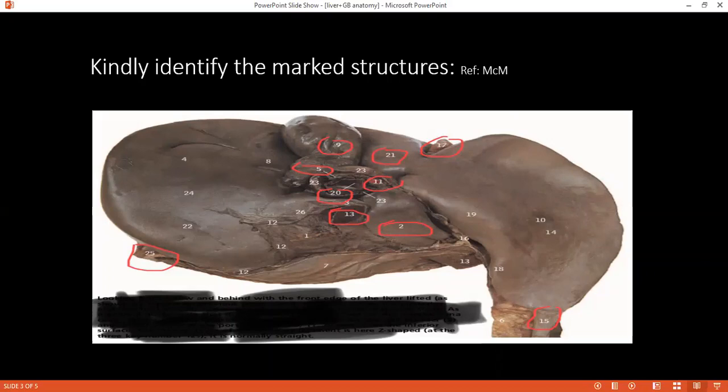Can you please identify 20? Twenty is portal vein. And 13, please. Thirteen is inferior vena cava. Twelve, uh, 2 please. Two is caudate lobe.